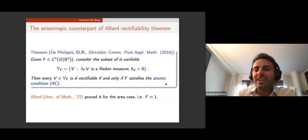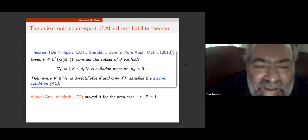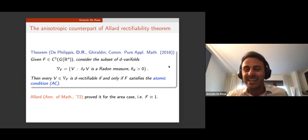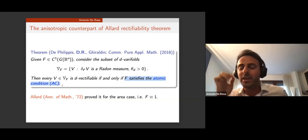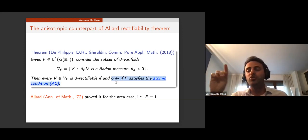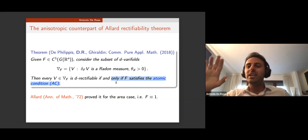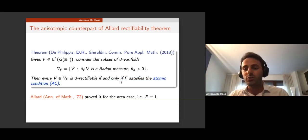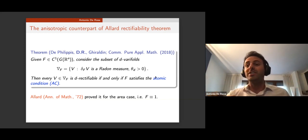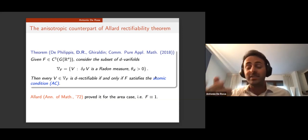A question from the audience: is F elliptic or just any C^1 function? The result is not true for every C^1 function — we characterize it: we know all and the only functions for which it is true, namely those satisfying the atomic condition. This condition is not only sufficient but also necessary. The atomic condition will be a focus of the next several slides to understand what it means.